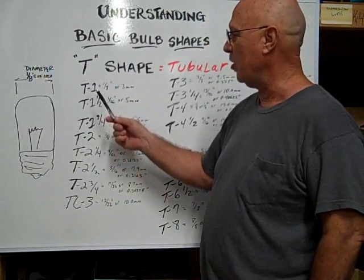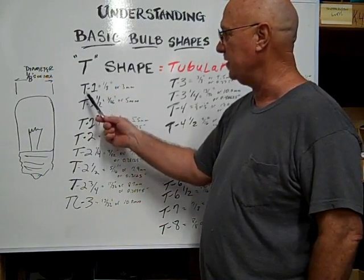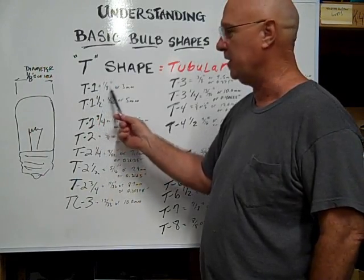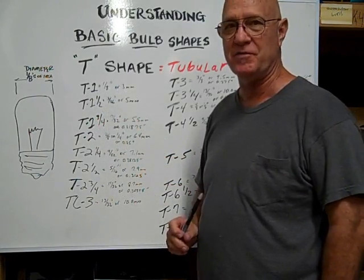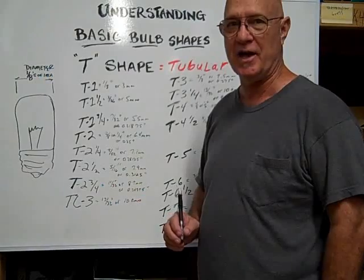If you have a bulb that has a T in front of a number, the T stands for tubular shape, and the number after it is the number of eighths of an inch in diameter of the glass envelope.